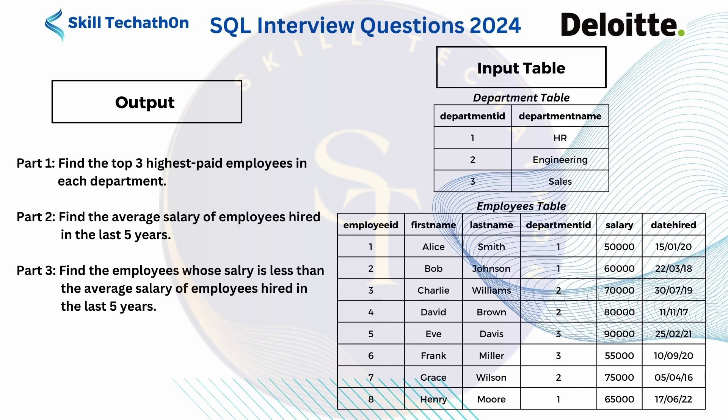The questions are: first, find the top three highest paid employees in each department. Second, find the average salary of employees hired in the last five years. Third, find the employees whose salary is less than that average salary. We are going to use the solution of part two to get part three.